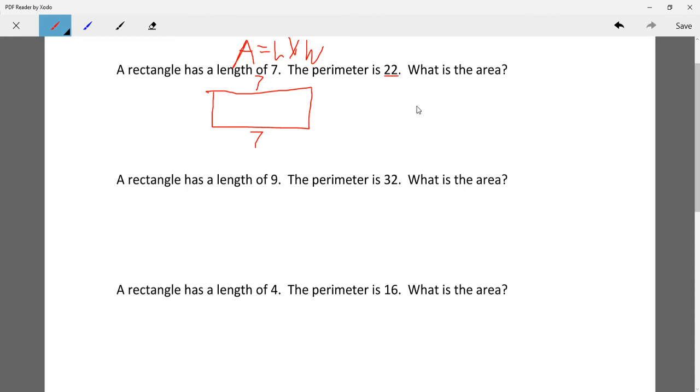So that means 7 plus 7 is 14. Now the perimeter is all of the sides added up. So what we have to do is we have to figure out what these sides are. So if we know that 7 plus 7 is 14, what we can do is do 22, which is the perimeter, minus 14, right? So 22 minus 14 equals 8, okay?